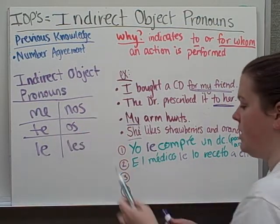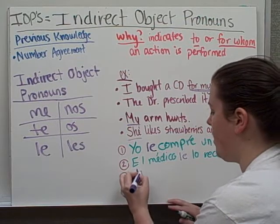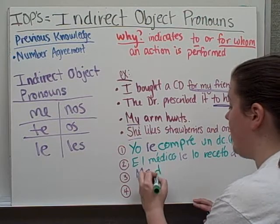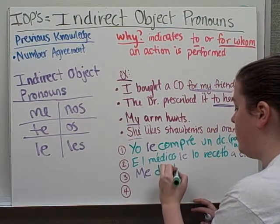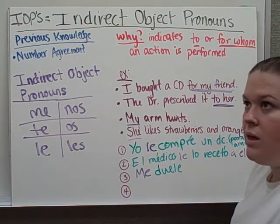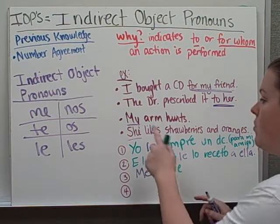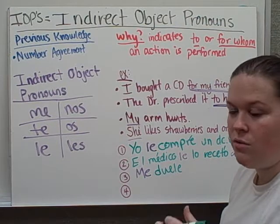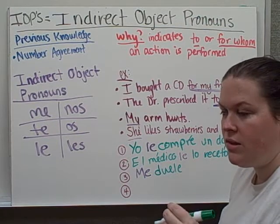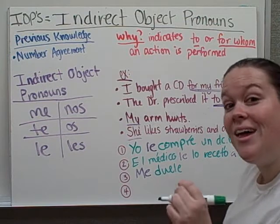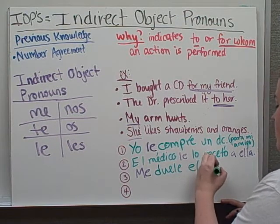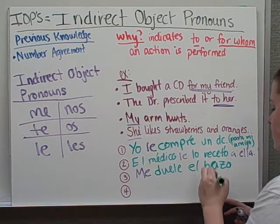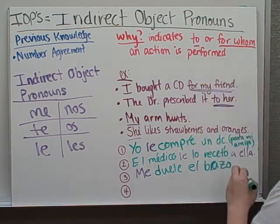Number three: my arm hurts. Technically it translates as 'my arm hurts me.' Who does it hurt? Me — which would be me. Me duele el brazo. Duele is a stem changer. And remember, because it's a body part, you don't say mi brazo — you use the definite article: el brazo. That's B-R-A-Z-O.